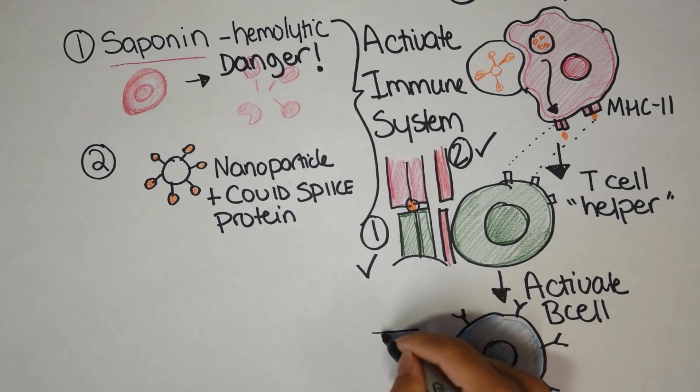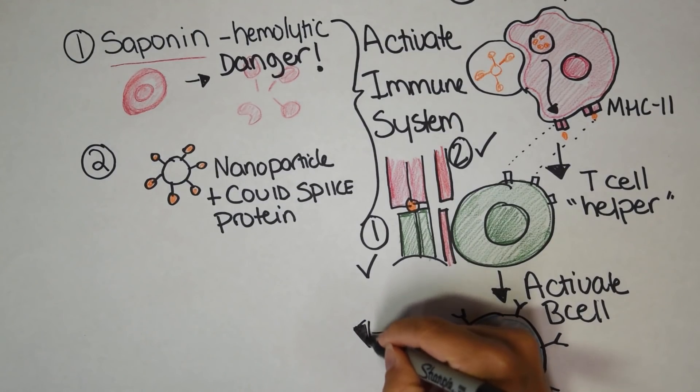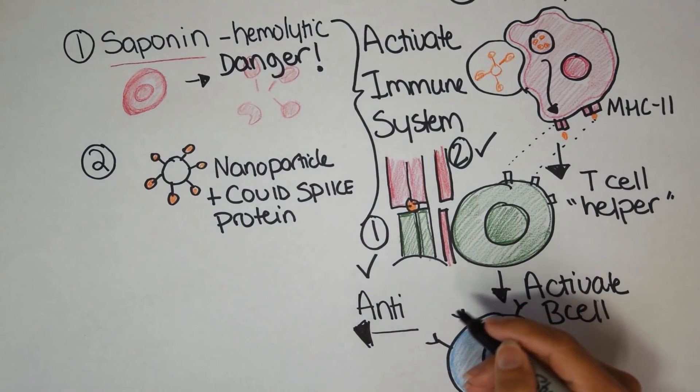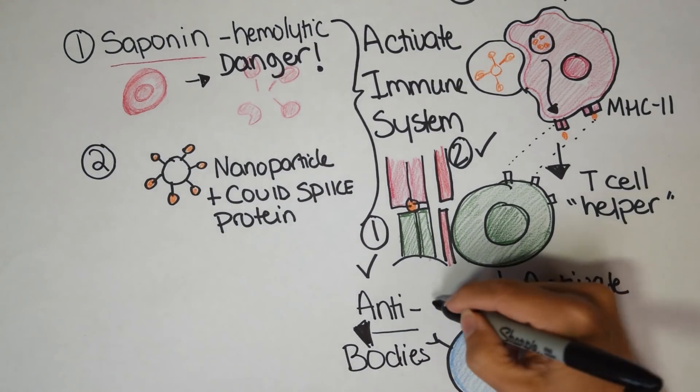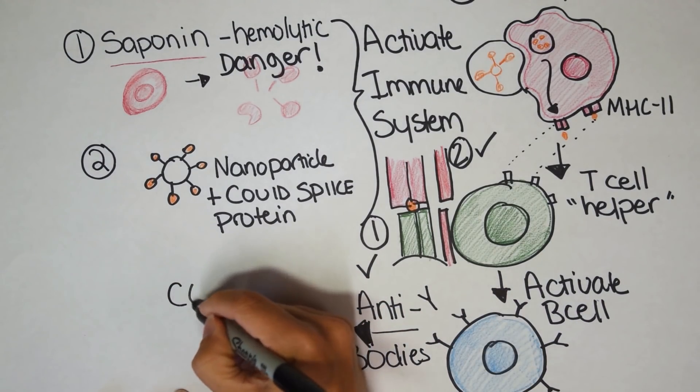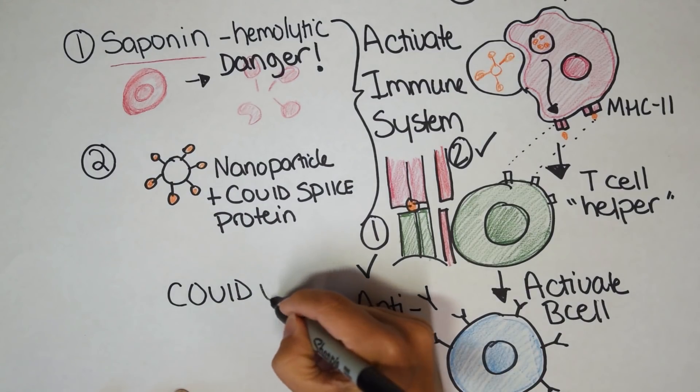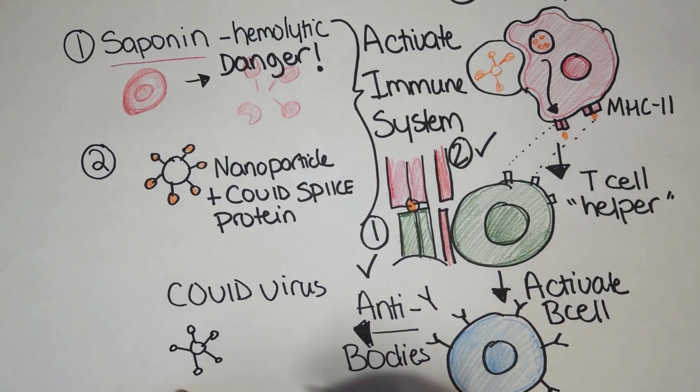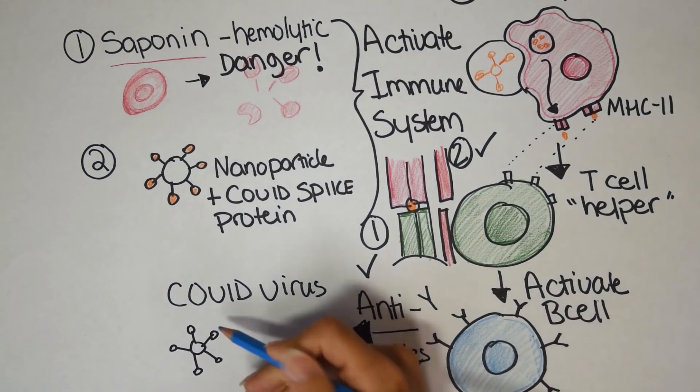All right, so here we go. I'm going to show you what an antibody does to a COVID virus. So let's say you received two shots of the Novavax vaccine. And you have these blue antibodies just floating around. They're in your mouth, they're in your lungs, they're in your bloodstream. And if somebody coughed on you, gave you the COVID virus, it would immediately be neutralized with the antibodies in your bloodstream.